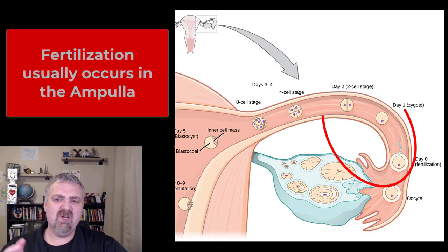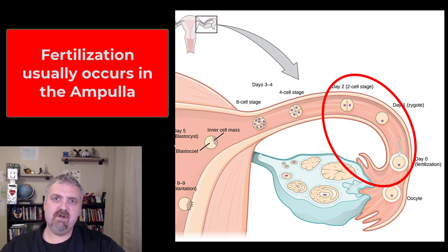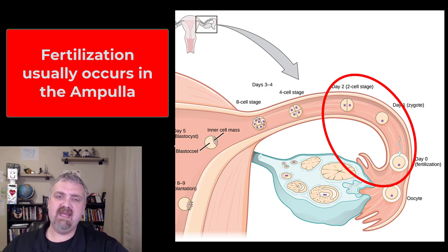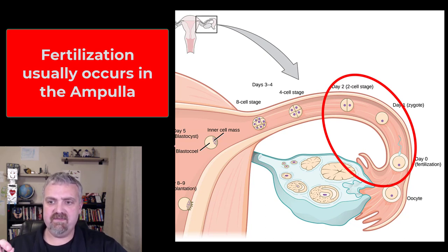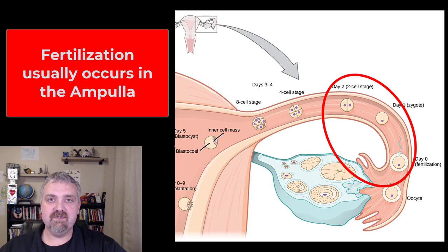Somewhere in the ampulla of the uterine tube is where you're going to see fertilization usually. This image here shows it actually close to the infundibulum; others would say it'd be closer to the isthmus — but somewhere in the middle, in the ampulla. So the oocyte meets the sperm, we now have a fertilized egg which becomes a zygote, and then 2 cells, 4 cells, 8 cells as this cluster grows and travels to the uterus until it implants, and then the uterus will take care of it.